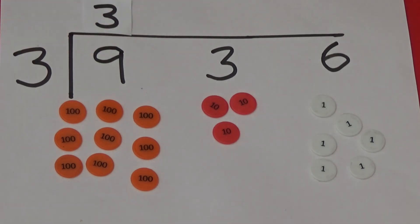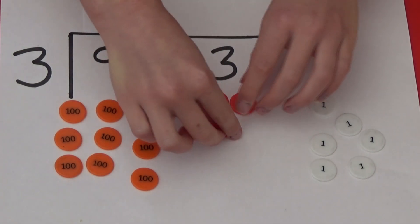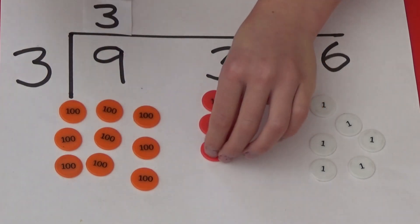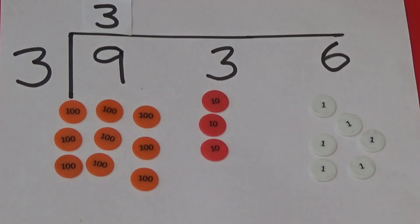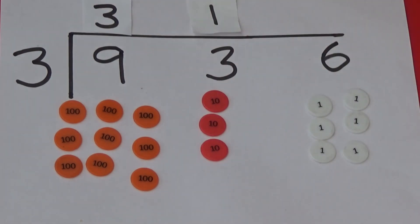We then do the same with the 10s counters. We can only make one group of 3 10s. So I am going to put the 1 above the line. Finally, we are going to divide our 1s into groups of 3. We can make 2 groups so I am going to put 2 above the line.